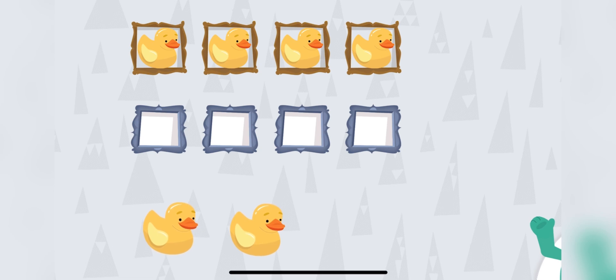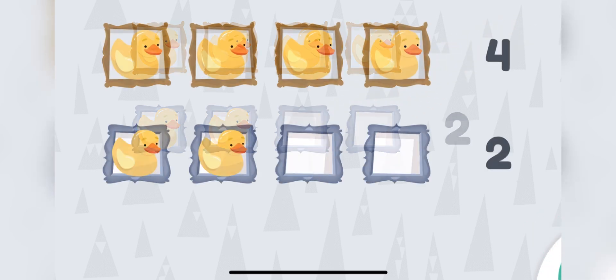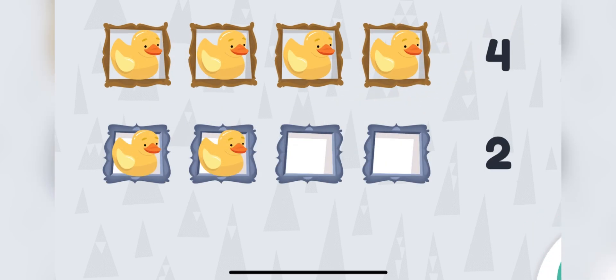Drag two toys to the bottom squares. One, two, three, four. Good thinking! Which row has more? You tapped the row with more.